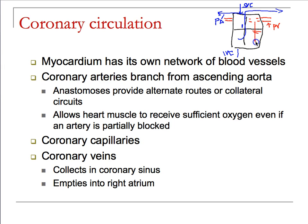The pulmonary veins return oxygenated blood to the left atria. From there, we go through the bicuspid valve, move into the left ventricle, and send blood out through the aortic semilunar valve. That's where our story begins, because there is an opening just on the other side of the aortic semilunar valve that allows us to begin the coronary circulatory system.